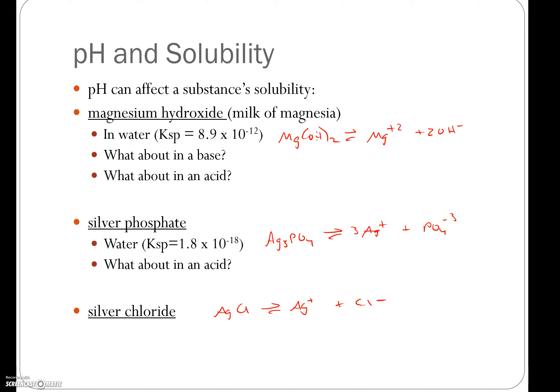But by adding an acid to this solution, we're not going to change the solubility of the silver chloride, because the hydrogen ions are not going to react with the chloride ions, since the chloride ions are a very weak base.